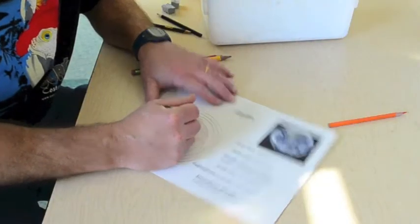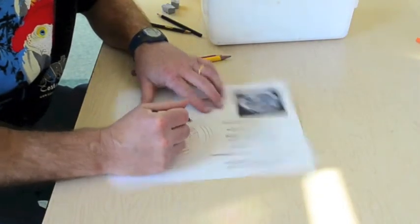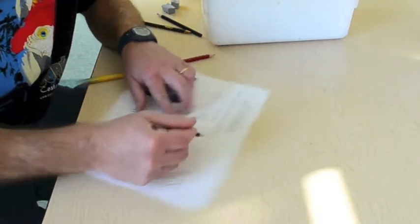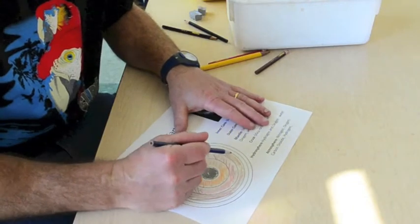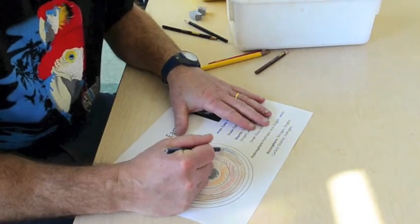So my crust is going to be mostly brown for the dirt and rocks, silica rocks that make up my crust of the earth. So you'll continue layer by layer until you've done everything from the core to the atmosphere.